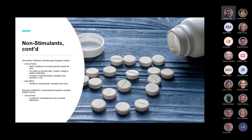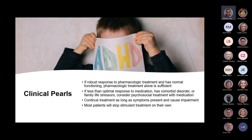Wellbutrin (bupropion), a norepinephrine-dopamine reuptake inhibitor, is a third-line non-stimulant option. Consider it for children and adolescents with comorbid depression, as you can treat both inattention and depression with one medication, especially if they have not tolerated stimulants, Strattera, guanfacine, or clonidine. Qelbree is a newer selective norepinephrine reuptake inhibitor approved by the FDA in April 2021 for ADHD in pediatric patients aged 6 to 17. I have no personal experience with it; reports from other psychiatrists are mixed on tolerability.